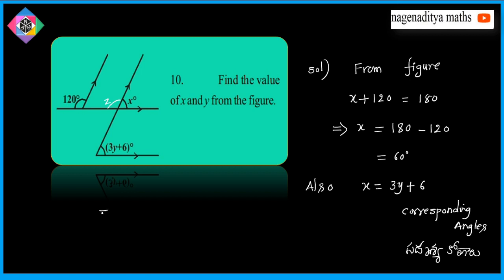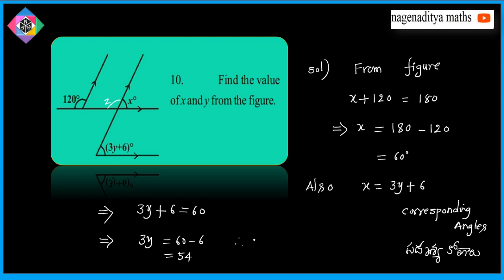Substituting the value of X, 3Y plus 6 is equal to 60 degrees. So 3Y is equal to 60 minus 6, that is 54 degrees. Therefore Y is equal to 54 divided by 3.